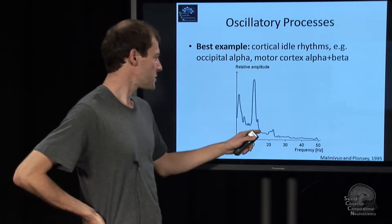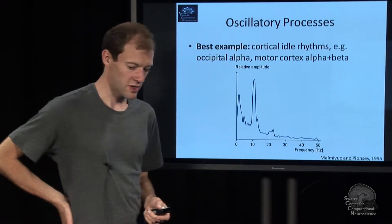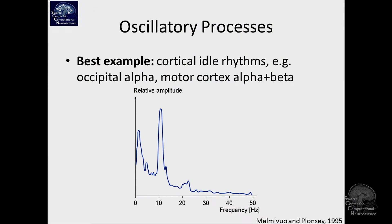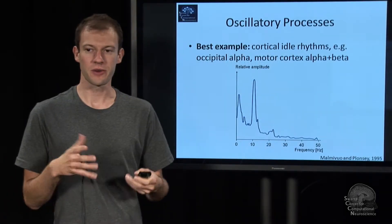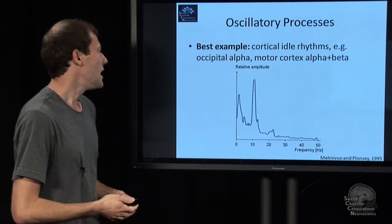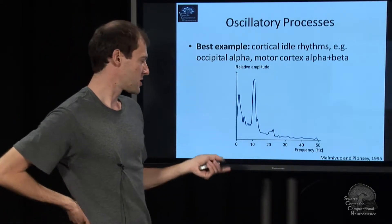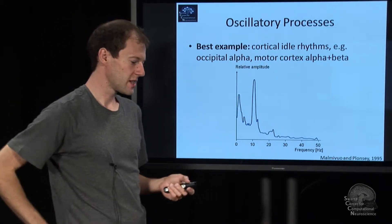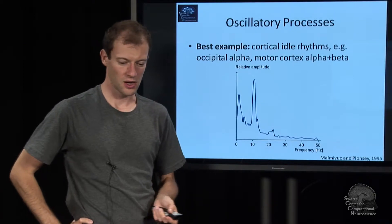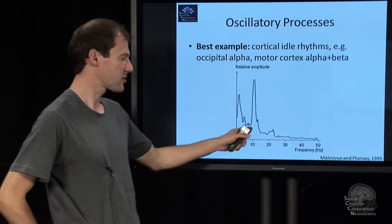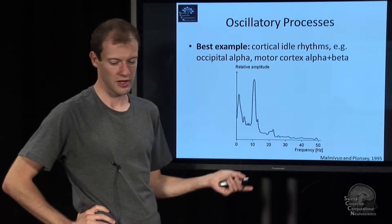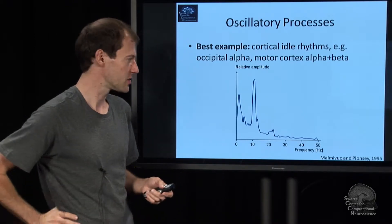These rhythms, and in particular this 10 hertz one, are the dominant cortical idle rhythms. That's just some large groups of neurons synchronizing their firing activity while they're not engaged. In the case of occipital cortex, that's called alpha rhythm, 10 hertz approximately. It can be different for people - some have 11 or 12 hertz, some have 8 or 9 hertz.